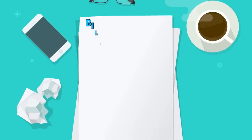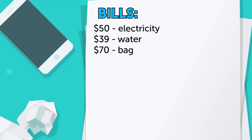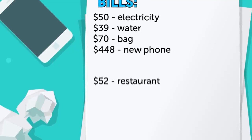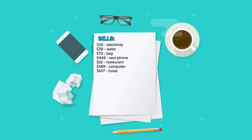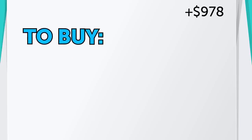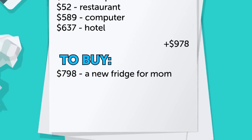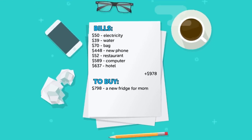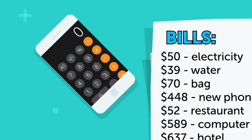Johnny is going through his bills: $50 for electricity, $39 for water, $70 for a bag, $448 for a new phone, $52 for dinner at a restaurant, $589 for a computer, $637 for a room in an expensive hotel. He has received a $978 bonus at work, but he also needs to buy a new fridge for his mom, and it costs $798. John has to leave soon, but he wants to know how much money he'll need. How can he calculate it quickly? He should use the calculator app on his phone. The simplest answer is often the right one.